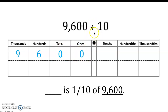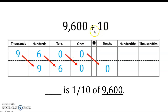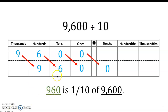Because you see the division sign and a value of 10 as your divisor, you know that you are moving all of these digits one place to the right. They're moving to the right because the value of the digits is decreasing by exactly one place value, which is one-tenth of. The 9 in the hundreds place is one-tenth of the 9 in the thousands place; the 6 in the tens place is one-tenth of the 6 in the hundreds place, and so on. From there you get your quotient, which is 960 — 960 is one-tenth of 9,600.